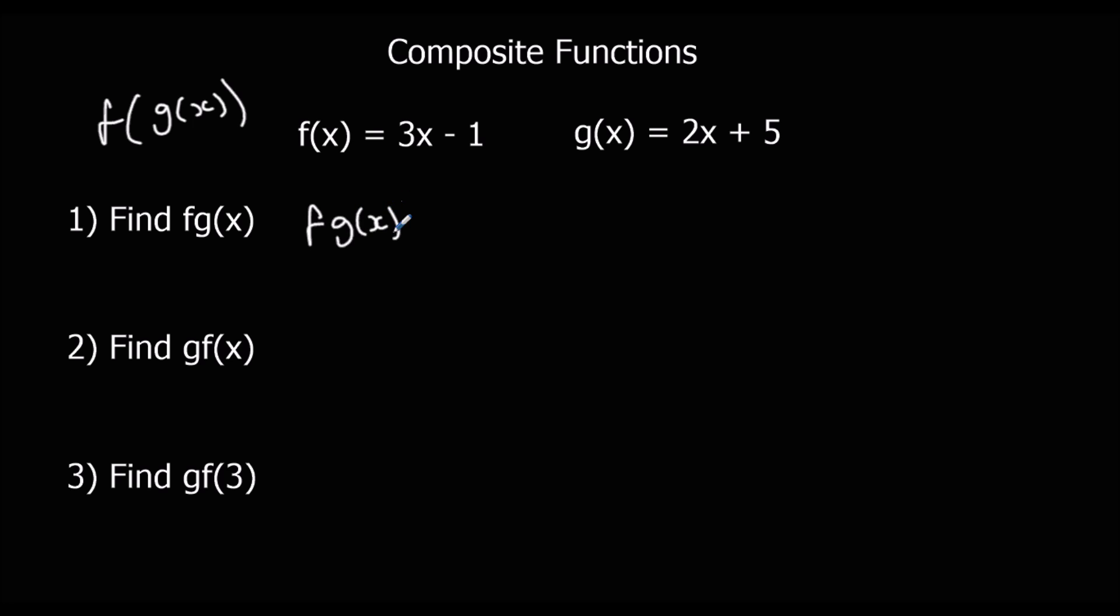So f g x is 3 times 2x plus 5 minus 1. Expanding the bracket gives me 6x plus 15 minus 1, which is 6x plus 14.